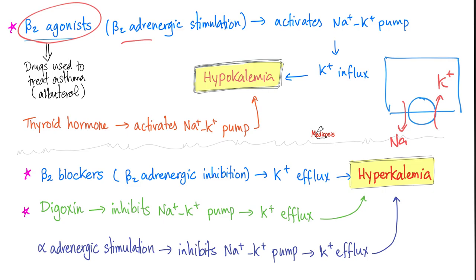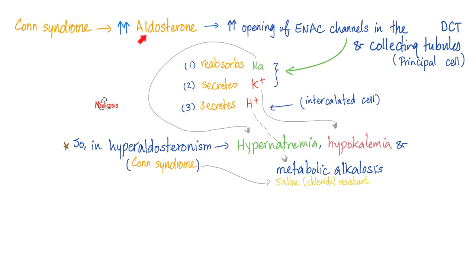Hyperthyroidism can have the same effect — it can lead to hypokalemia. If beta-agonists cause hypokalemia, what do beta-blockers do? The opposite: hyperkalemia, because they inhibit the sodium-potassium ATPase. Digoxin also inhibits the sodium-potassium ATPase pump, which means it can lead to hyperkalemia.